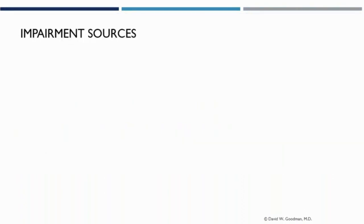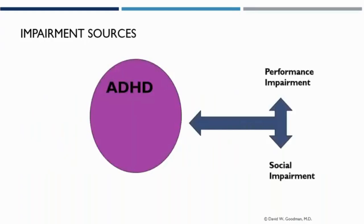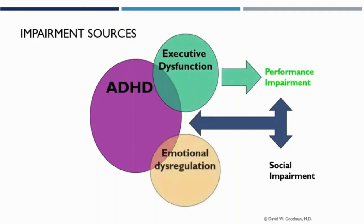Sources of impairment: people talk about ADHD causing performance and social impairment. However, if you have executive dysfunction with ADHD — difficulty planning or organizing — then your performance is further compromised. In addition, if you have emotional dysregulation, meaning difficulty controlling your emotional fuse, you have a longer emotional fuse, you're highly impatient or easily frustrated, that causes social impairments. When treating ADHD, we also consider whether this person has executive dysfunction, because executive dysfunction tends not to respond as well to medication. If you have emotional dysregulation, we need to see whether that improves with medication or whether you need additional cognitive behavioral therapy.